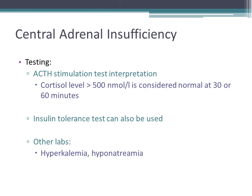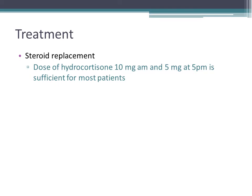Other lab abnormalities in central adrenal insufficiency include hyperkalemia and hyponatremia. Treatment is with steroids — the steroid of choice is hydrocortisone, 10 mg in the morning and 5 mg at around 5 p.m., mimicking the normal physiology where glucocorticoid levels are highest early in the morning and decline throughout the day.